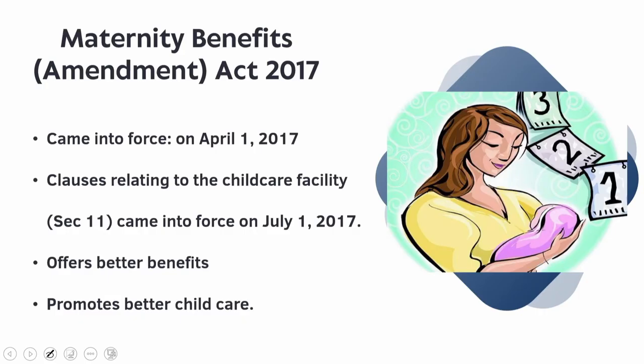Looking at the Maternity Benefits Amendment Act 2017: before discussing the amendment, we must understand the period of granting maternity benefit. In accordance with subsection 5 of section 5, if a woman's job requires her to work from home, the employer may permit her to do so after she has claimed the maternity benefit for a mutually agreed period. The maximum time a woman may get maternity benefits is 26 weeks, not including the eight weeks prior to the due date of her anticipated delivery, as per section 5, now amended by the Maternity Benefit Amendment Act 2017.